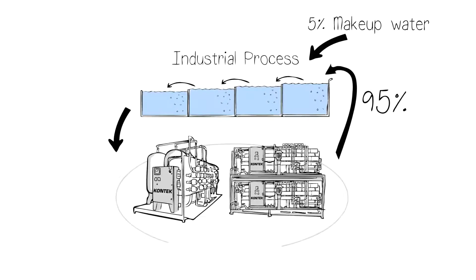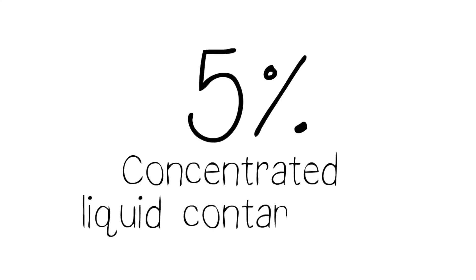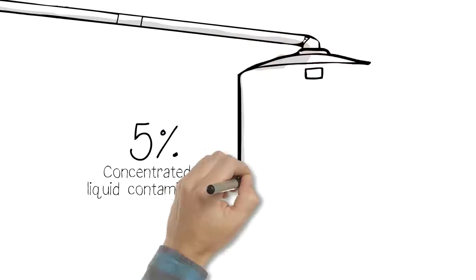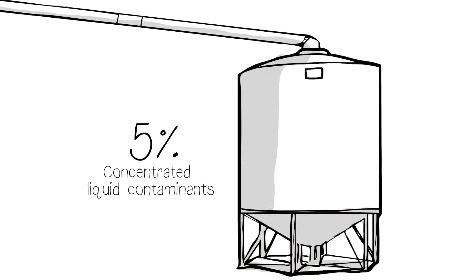Our recovery process gets you 95% or more reusable purified water, which can be used in place of fresh water in your industrial process. The remaining 5% concentrated liquid contaminants are processed to become both liquid and wet solid precipitants.